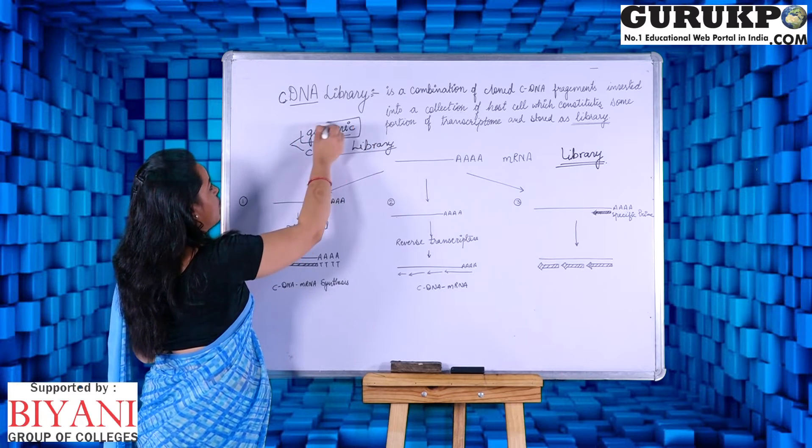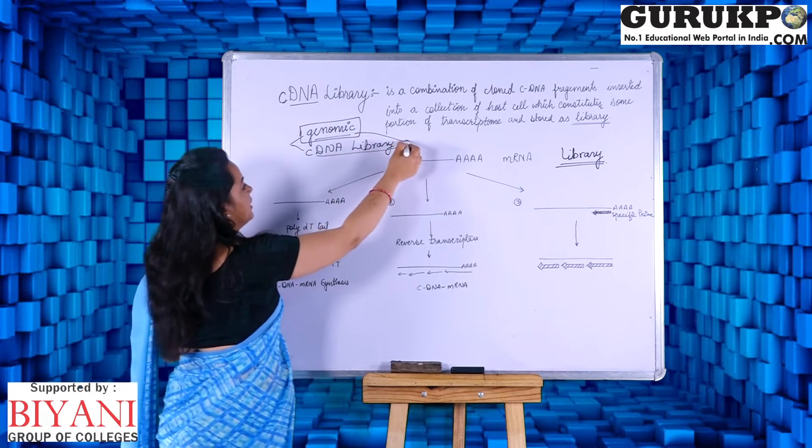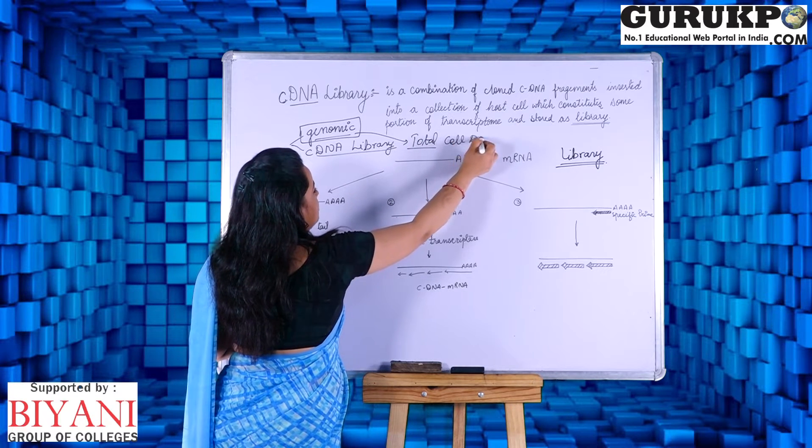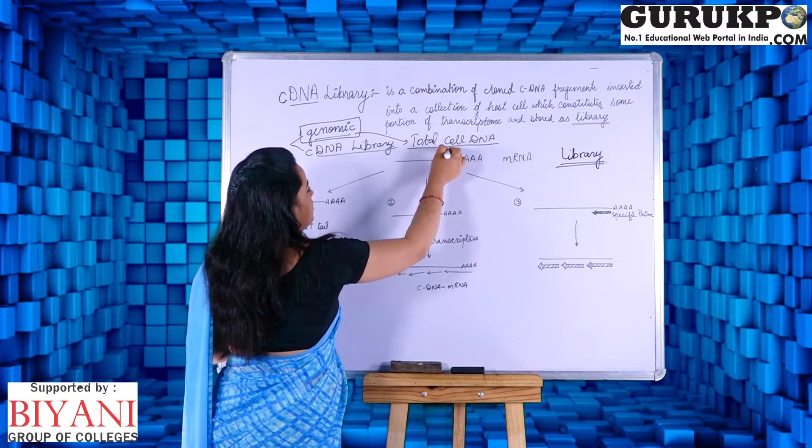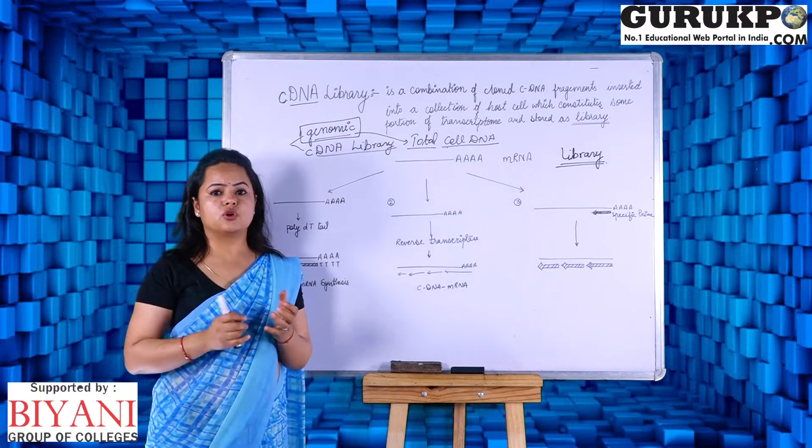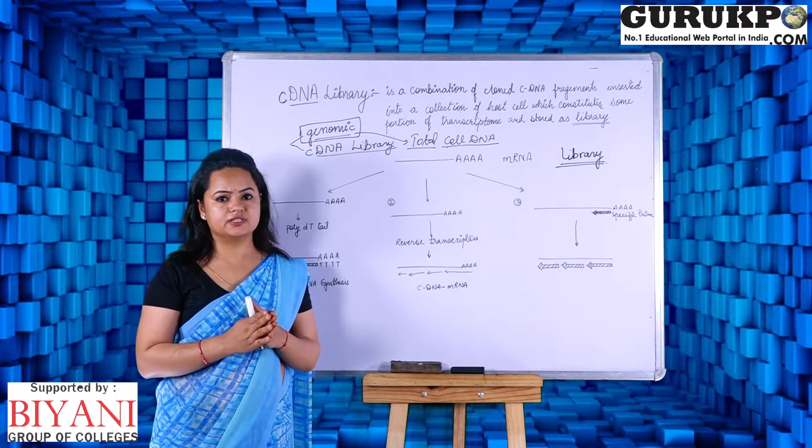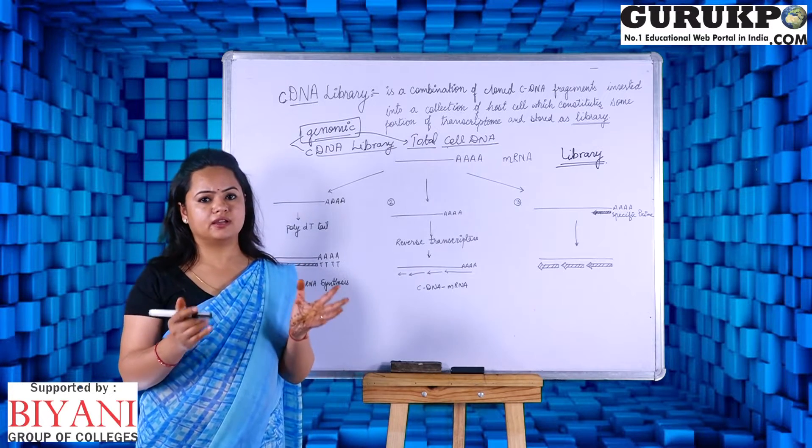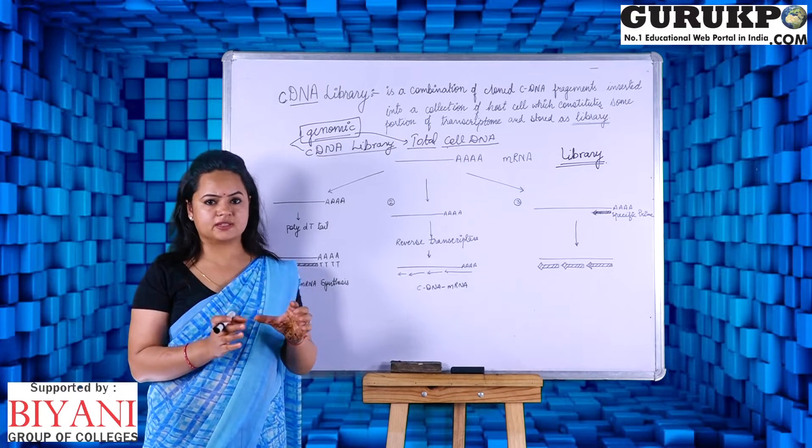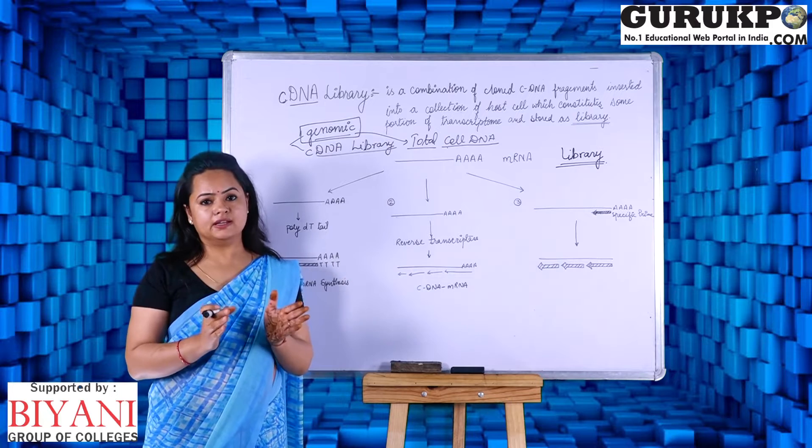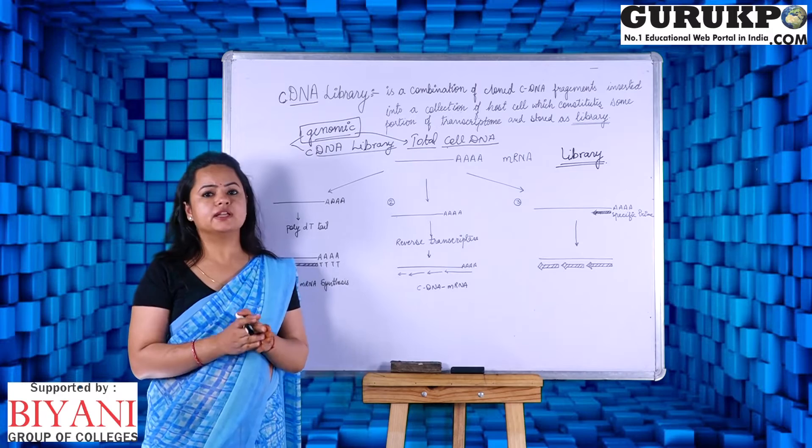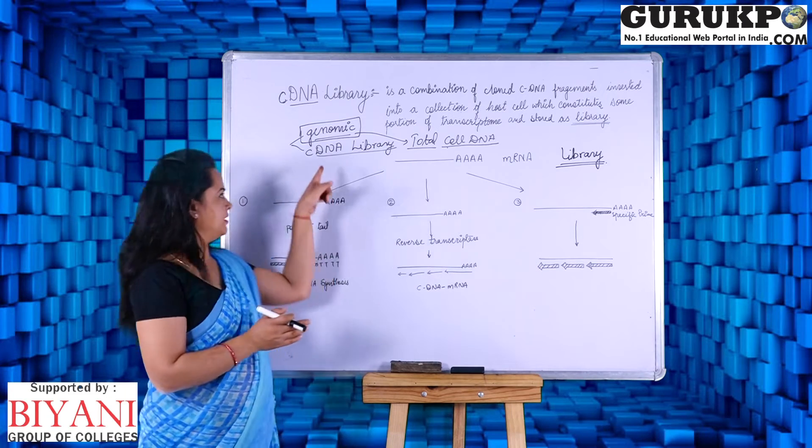A genomic library will constitute all the total cell DNA of an organism, which means if an organism's cell has the DNA, it will constitute of introns and exon sequences. A genomic DNA library will have all the collection of exons and introns of an organism. That is the whole cell DNA of an organism when it is collectively assembled together is placed in a genomic library.